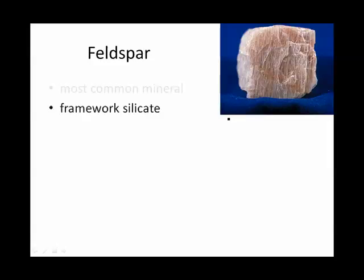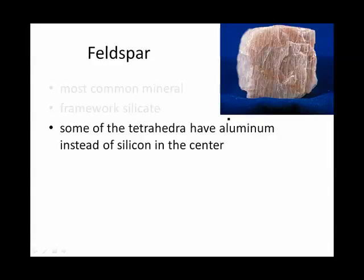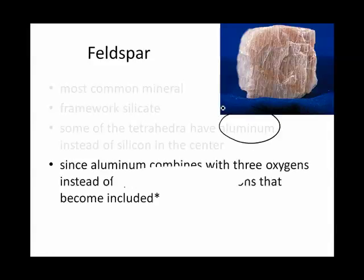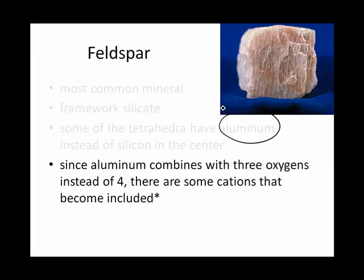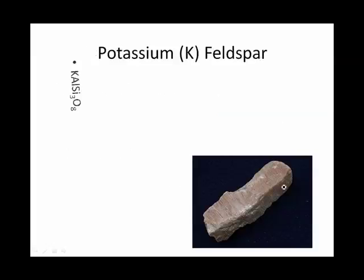Feldspar is the most common mineral in the world. It's a framework silicate, but some of the aluminum has taken the place of the silicon. That leaves space for all sorts of other cations to become involved, since aluminum and silicon don't have the same valence. Potassium feldspar, as you might guess, has potassium, and aluminum, and silicon, and oxygen.